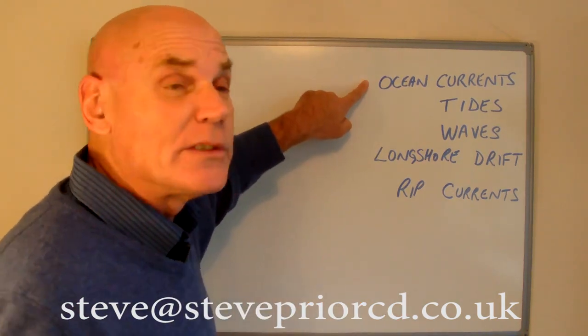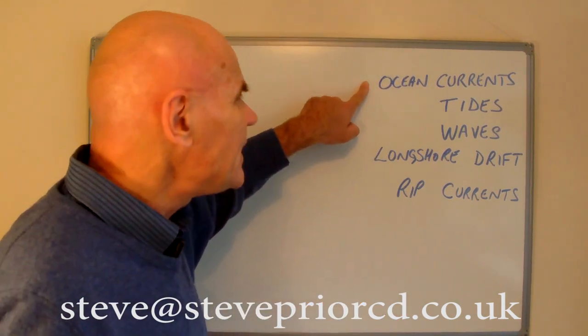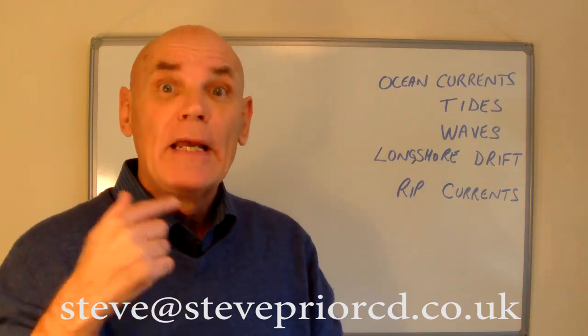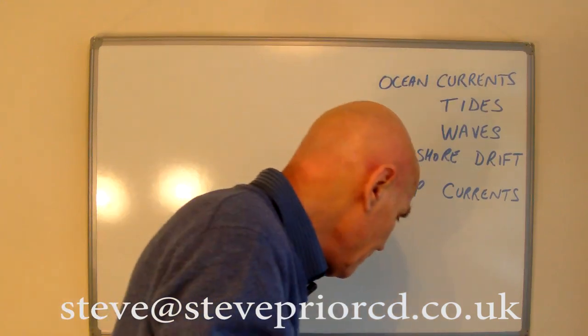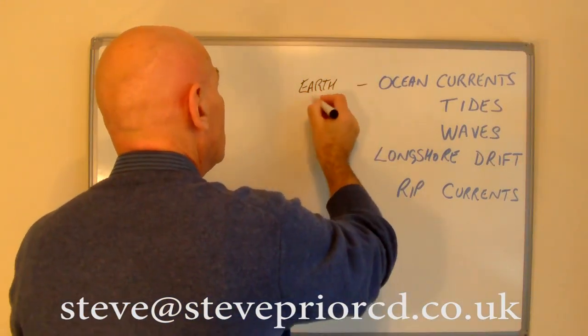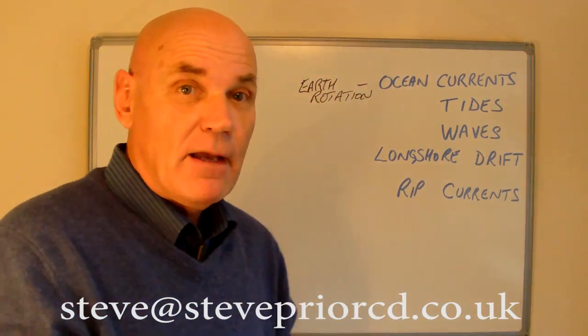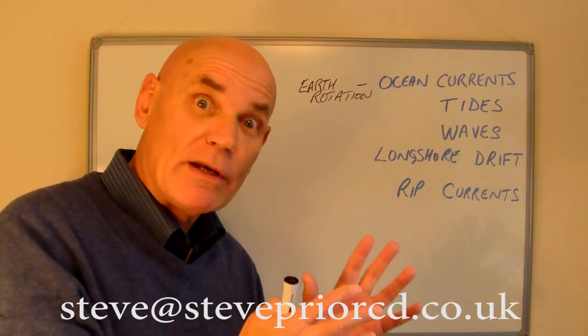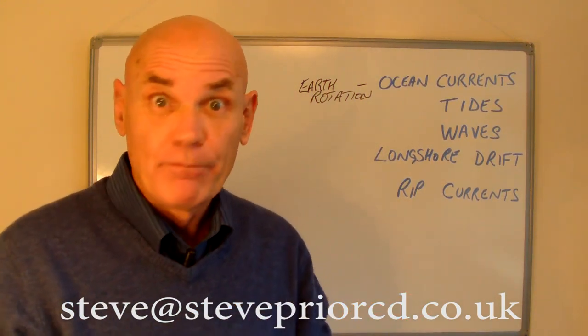The first topic is major ocean currents. This is about where currents move clockwise in the northern hemisphere and counterclockwise or anti-clockwise in the southern hemisphere. This is called the Coriolis effect, and it's caused by the rotation of the earth. I've got a complete video about this very subject, so I'll leave that one for now and move on.